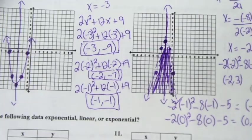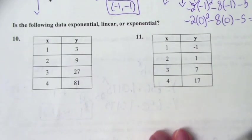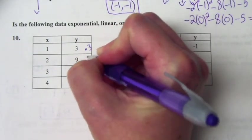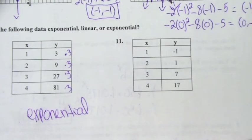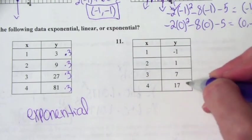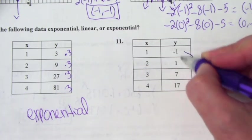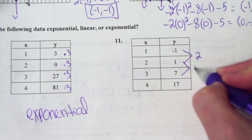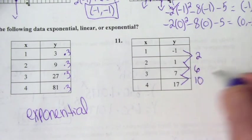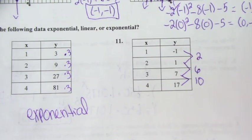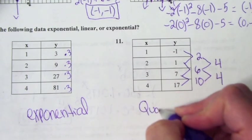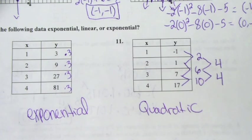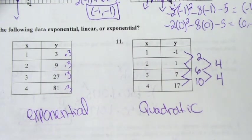Numbers 10 and 11 we just did yesterday. Number 10 is exponential because it's times 3 each time — when that happens, it's exponential. For number 11, we notice it's not times something each time, so we find differences: between negative 1 and 1 is 2, between 1 and 7 is 6, between 7 and 17 is 10. These aren't the same so it's not linear. We try second differences: 6 minus 2 is 4, and 10 minus 6 is 4. Since the second differences are equal, we call that quadratic. Those are the things that will be on the test tomorrow.